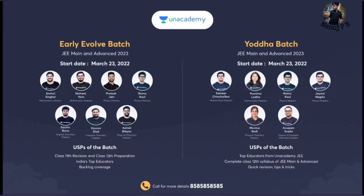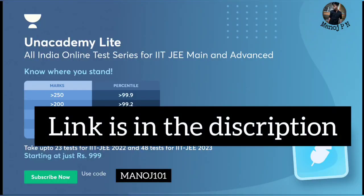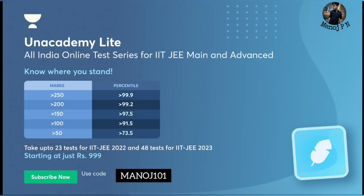One batch is the Early Evolve batch with a 24-month duration, and there is also a 23-month option. Please don't delay — go register yourself. You will get access to the entire subscription video lectures. Use my code MANOJ101 to get this course at only Rs. 999.